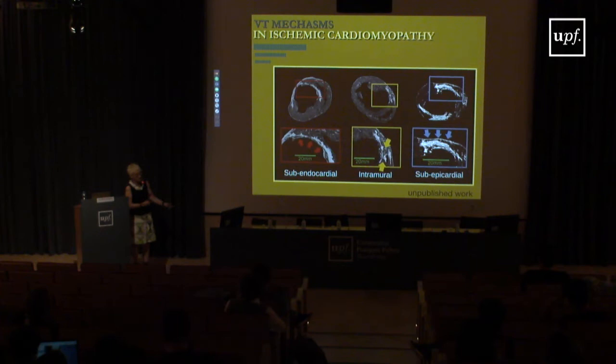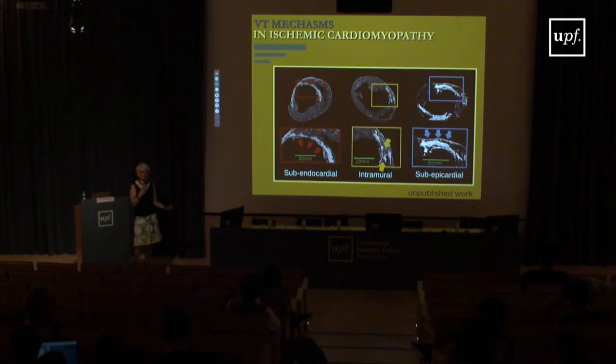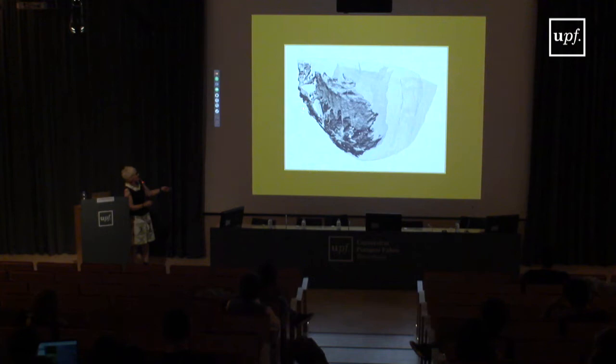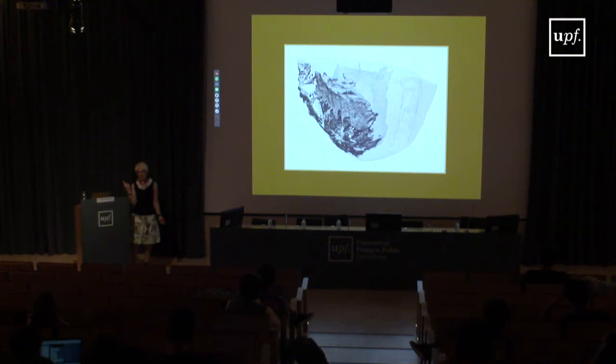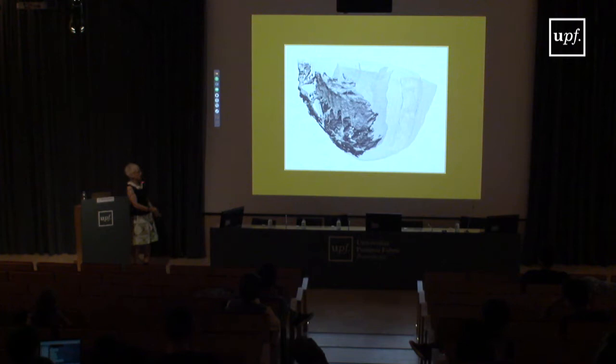We reconstructed these high-resolution scans into models to understand how scar distribution in infarcted hearts sets the stage for arrhythmia. In three dimensions, the scar is extremely complex — there are channels, patches, and surviving tissue between them — through which electrical propagation can travel in highly convoluted pathways.